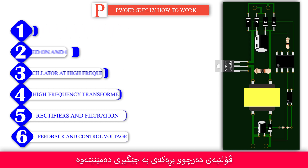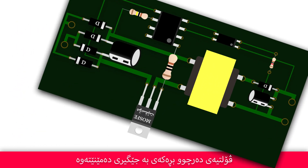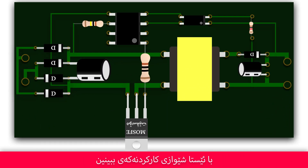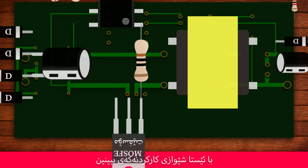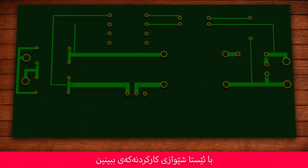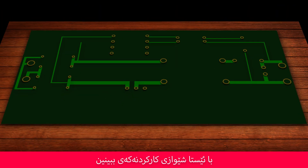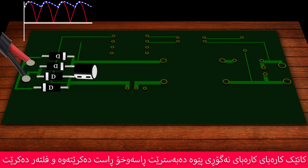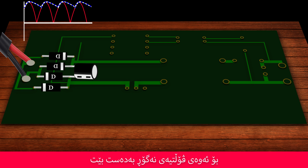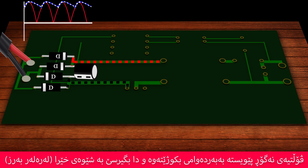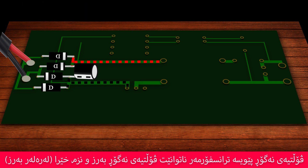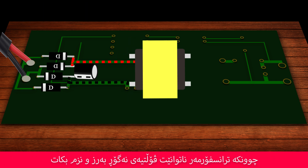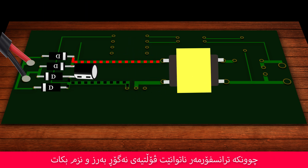In this operation the output voltage remains constant. When the AC voltage is connected, it is directly rectified and then filtered to obtain a DC voltage. This DC voltage must be switched on and off at high frequency, because the transformer can't increase or decrease the DC voltage.